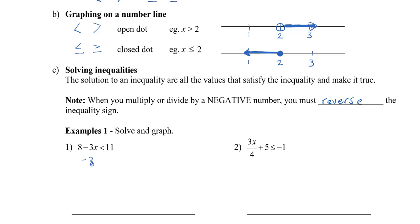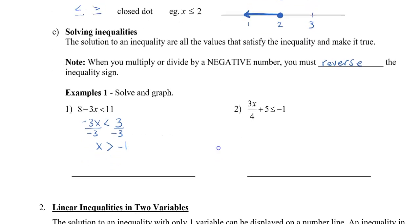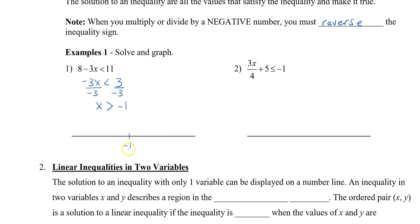We have negative 3x — we're going to solve it the same as if it were equal. We're going to subtract 8 from both sides, and this is going to be less than 3. Now we're going to divide by negative 3 on both sides, so x is now going to be greater than negative 1. When we graph this solution, we place negative 1 in the center, pick 0 and negative 2 on each side. Since it doesn't have the equal line underneath, I draw an open circle at negative 1, and since x is bigger than negative 1, the arrow points to the right.